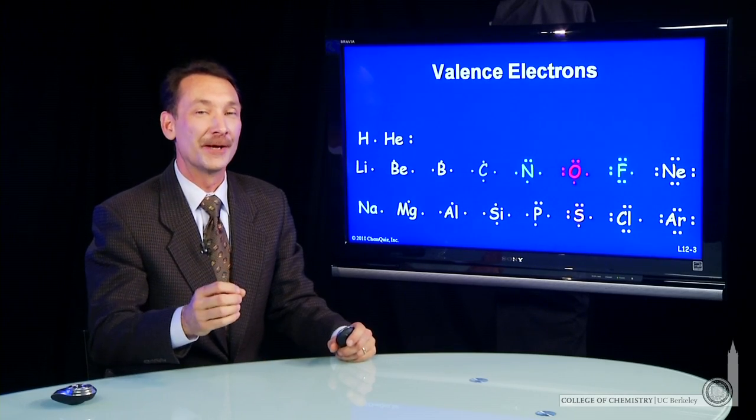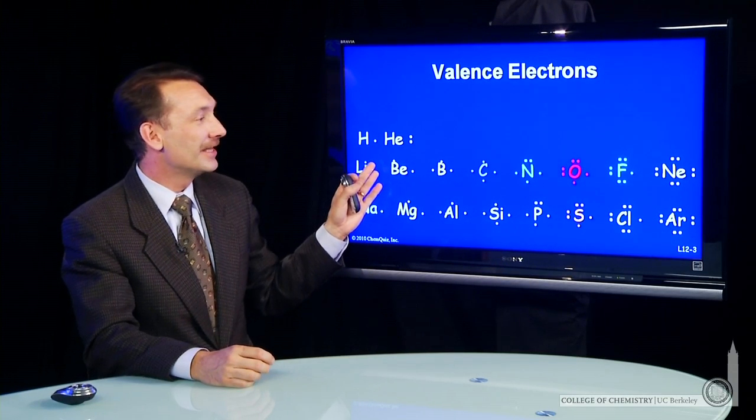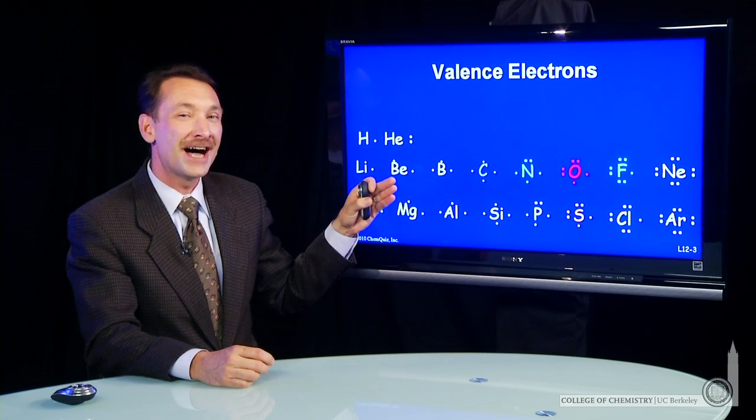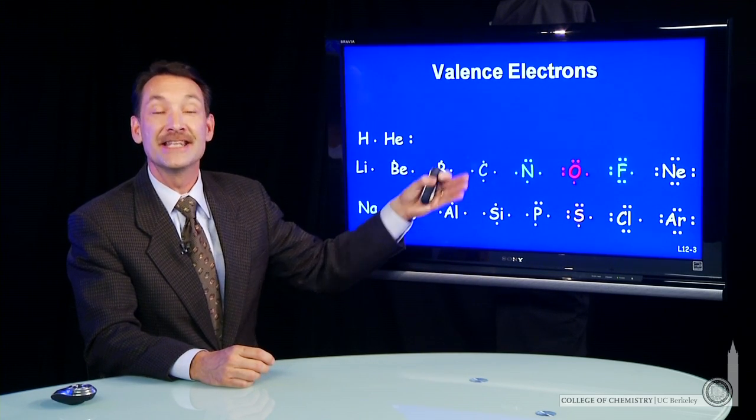Let's look at the periodic table in a slightly different way. What I've done here is I've written out the periodic table and I've represented by dots the number of electrons in the outermost shell.